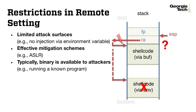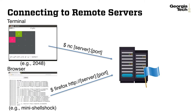I'd like to emphasize that in our threat model, attackers know the exact binary of the running program in the remote environment. In this week's challenges, there are two ways you can connect to the server. In most cases, you can connect to the remote server through a terminal client, such as Netcat.